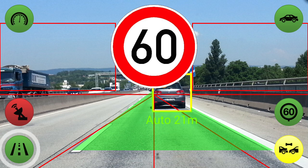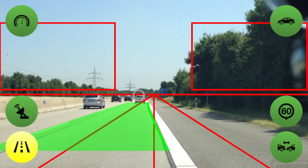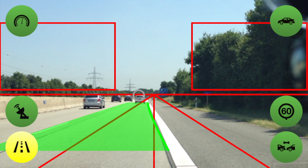The lane control is responsible for warning the driver if the vehicle is about to cross a closed road mark. If the control detects a closed road mark, it is shown as a bold green line on the device screen. If the vehicle is about to cross a closed road mark, the driver is both visually and acoustically warned.